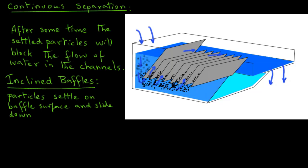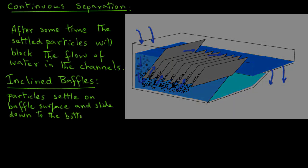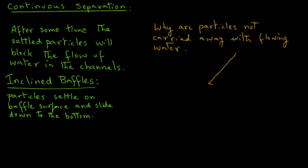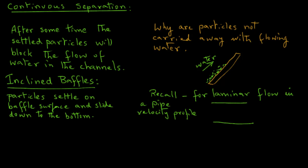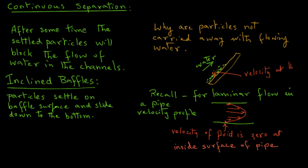You may ask a question: why aren't the particles carried away with the flowing water? Let's draw one of those inclined baffles with sand particles deposited on the lower part with the flow of water. Recall, for laminar flow in a pipe, the velocity profile is parabolic. The maximum velocity will be along the central axis and the fluid velocity is zero at the surface of the pipe. The same thing here on the baffle surface, the velocity of water will be zero and particles do not get dislodged. Instead they slide down the surface of these baffles.